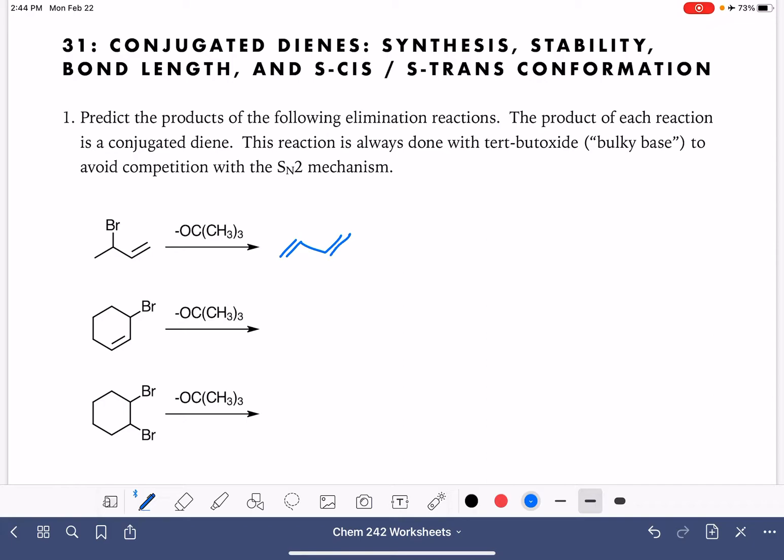Because a conjugated diene is the most stable type of diene, the conjugated diene is going to be formed over any other type. For example, a cumulated diene would not be formed in this reaction. Here's another example where we're starting with an allylic alkyl halide synthesizing a conjugated diene.